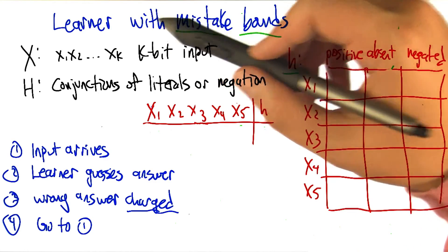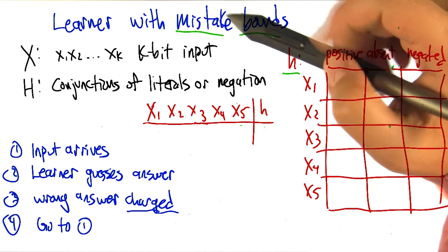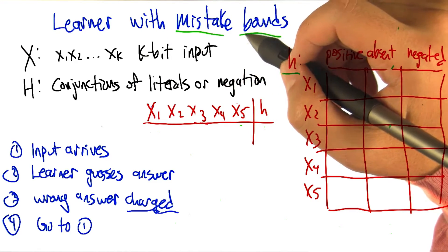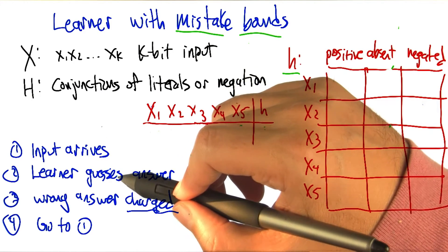We're going to use a learning formalism that's sometimes referred to as mistake bounds. So here's how things work in mistake bounds. The learner's sitting around and input arrives, and then the learner gets to guess an answer for that input.